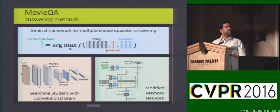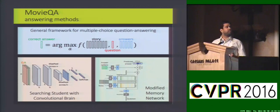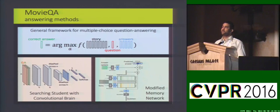We propose several generic frameworks for multiple choice answering, including a CLN architecture and modifications to the memory network to work with video and text.